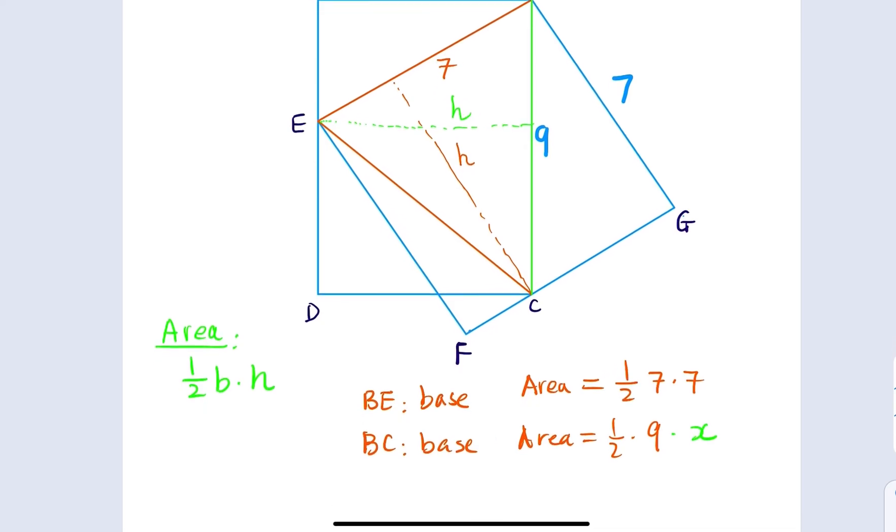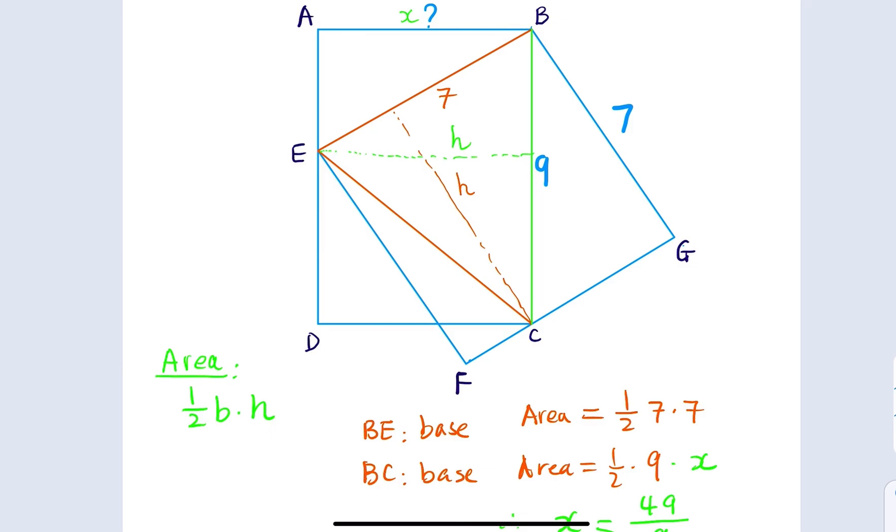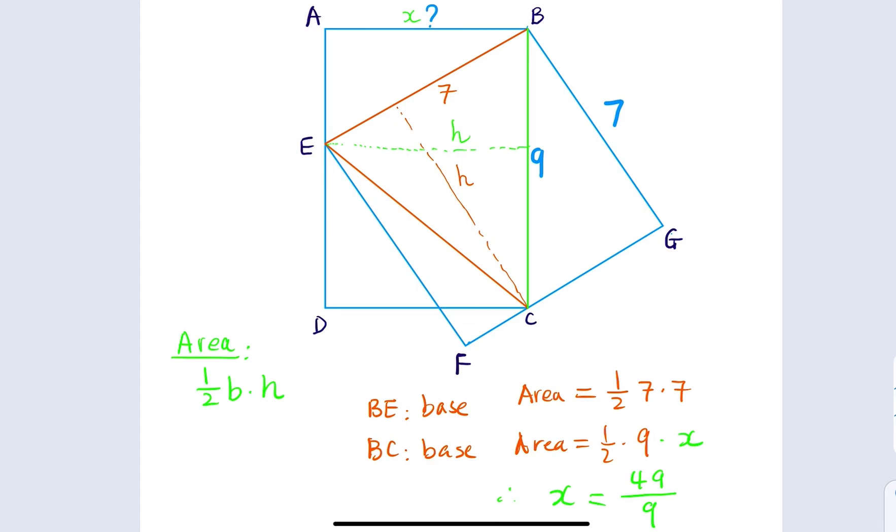From here we know that x must equal to 49 over nine, same answer. However, we're not using any similar triangles or anything like that. As elementary students, even knowing how to calculate triangle area, you're able to find this answer. Personally I find the second method simpler and easy to understand, and it's a beautiful proof.